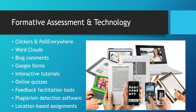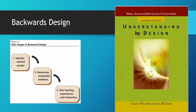I want to briefly mention Backwards Design by Wiggins and McTighe — a really useful book. The central idea is that you start by identifying the desired results, such as learning outcomes or what you want students to do at the end of the lesson. The second step is to determine acceptable evidence — what you'll do for assessment. Not until after these two steps do you start planning learning experiences and instruction. Assessment comes earlier in the process; it is not the last thing designed.